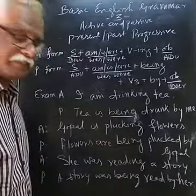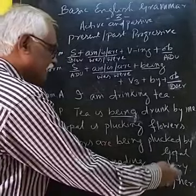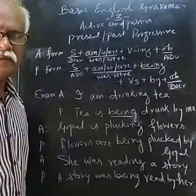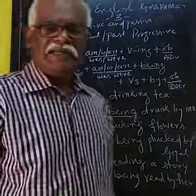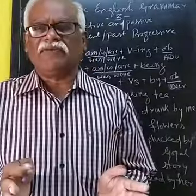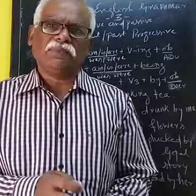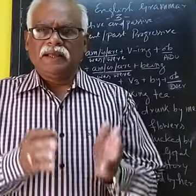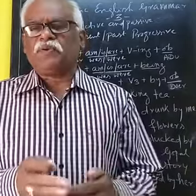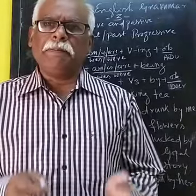'She was reading a story' — a story was being read by her. This is in past progressive passive form. It is not at all difficult if you know the form of transforming active into passive. In both present progressive and past progressive, we add 'being'.